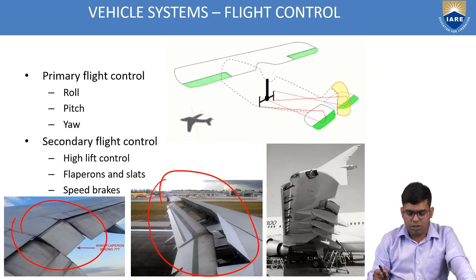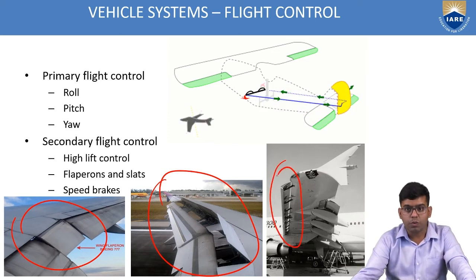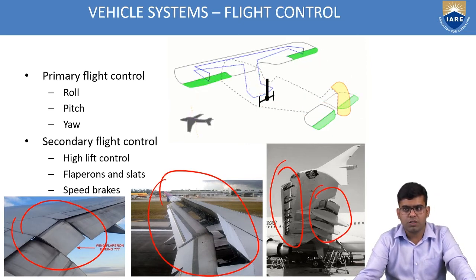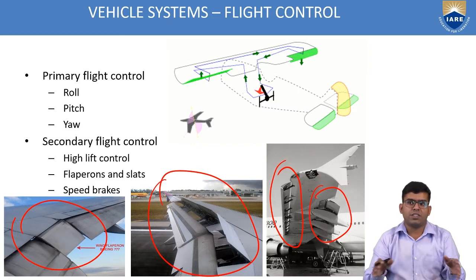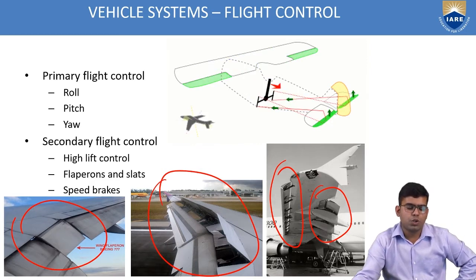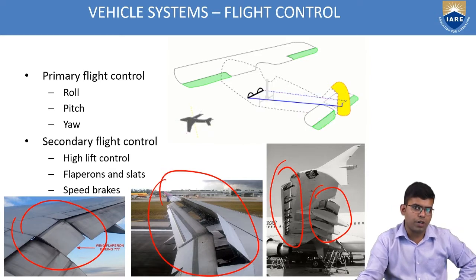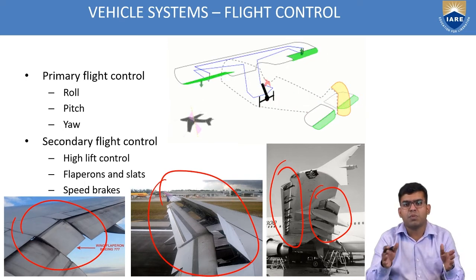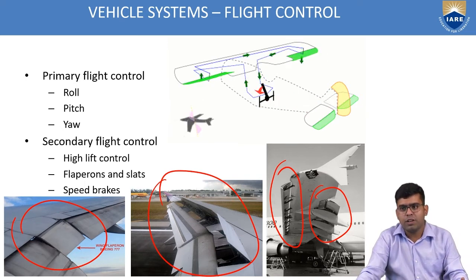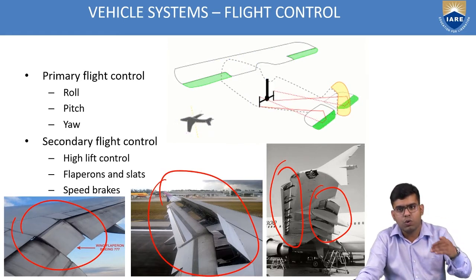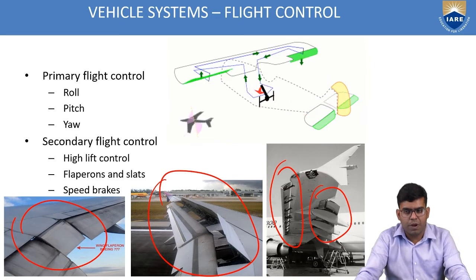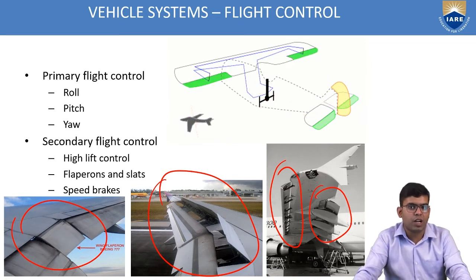On the bottom right corner, the image shows high lift control surfaces with both leading edge slats and trailing edge slats extended. They are used during both takeoff and landing operations. They increase the camber of the airfoil, which produces additional lift. These are the secondary control surfaces commonly used in civil aircraft.